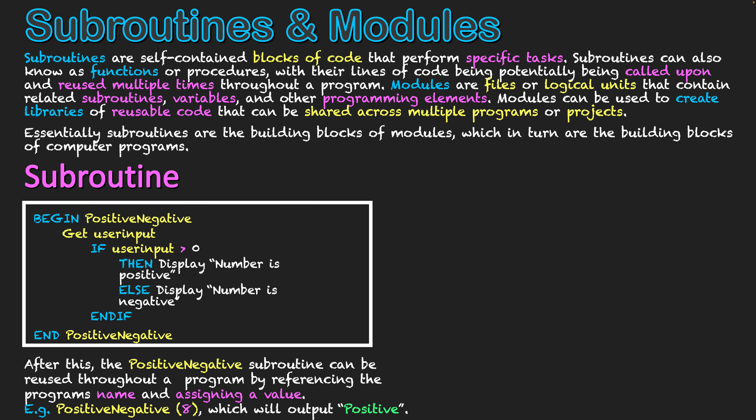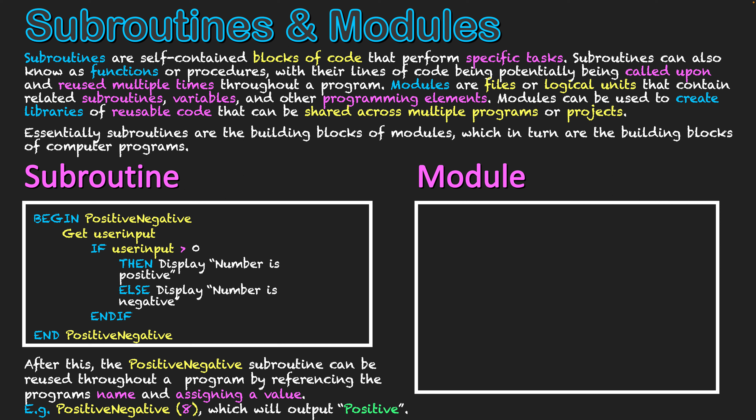That's it on the subroutine side. We just use the name and it references all the code we wrote earlier. Now let's go over to the module side. Modules can be separate files that we link to our actual program and reference. This one will be called my functions, and in here I could have a variety of different functions or subroutines all stored, not as their own program but as accessible subroutines stored within the module.